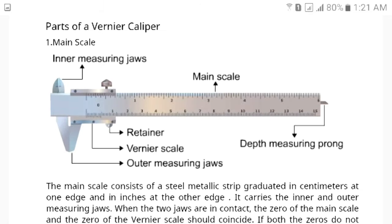Main parts of vernier caliper: main scale, vernier scale, upper jaws for inside measurement, lower jaws for outside measurement, depth prong for depth measurement, locking screws and retaining screws.